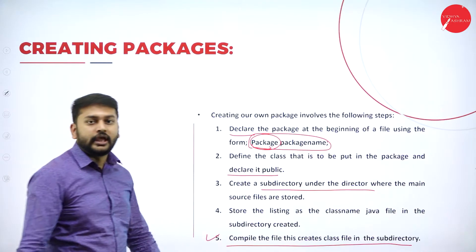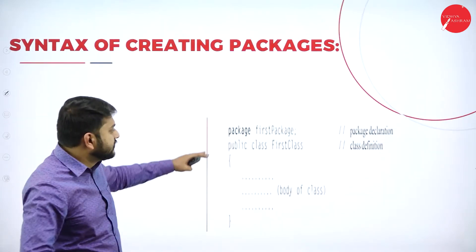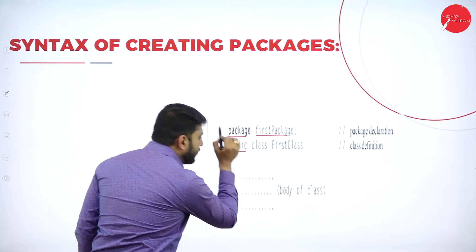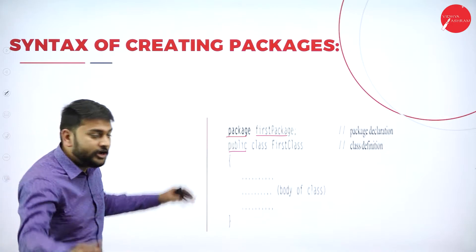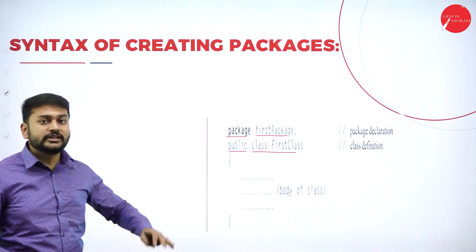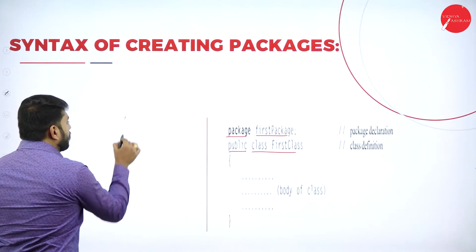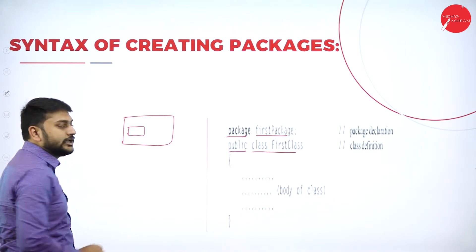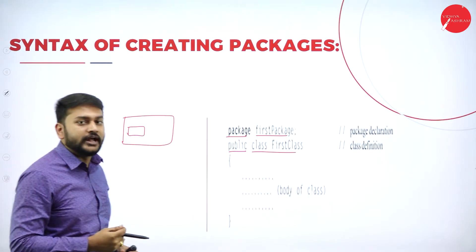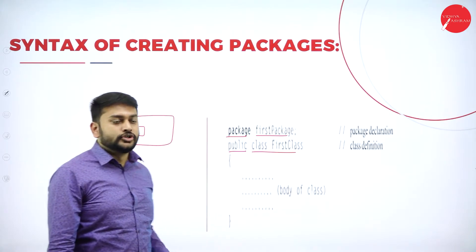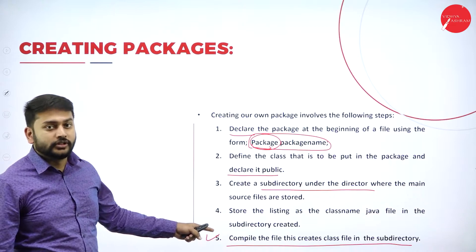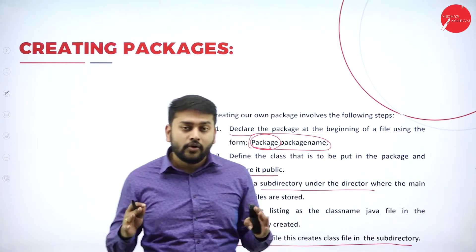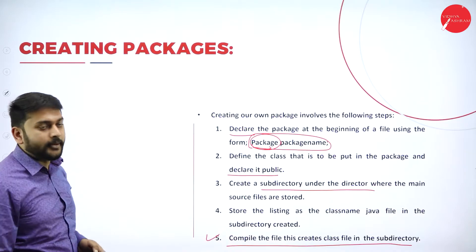So what happens inside the subdirectory — let me show you. You write 'package' followed by the package name, then use the keyword 'public' in front of the class name. I have a main folder where all source files are stored, and inside it I create one more subdirectory where I store the class. After compiling, the class file is created in that subdirectory. So: compile the file — this creates a class file in the subdirectory. This is how we create the package.